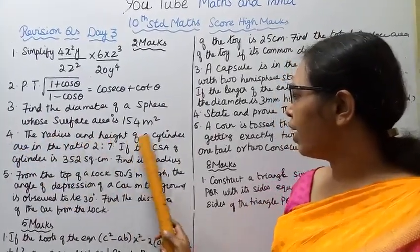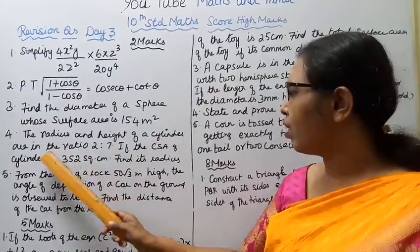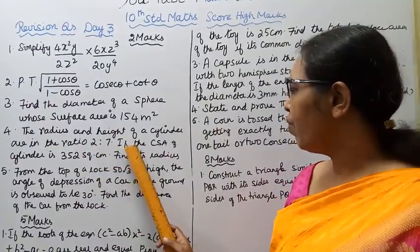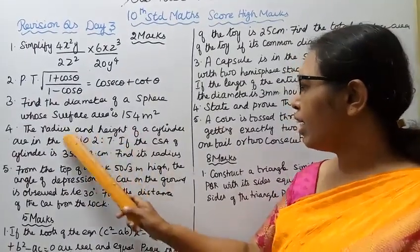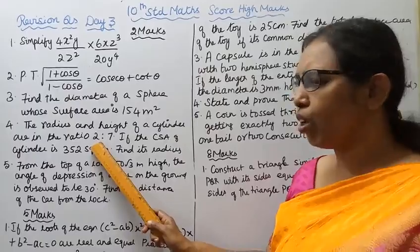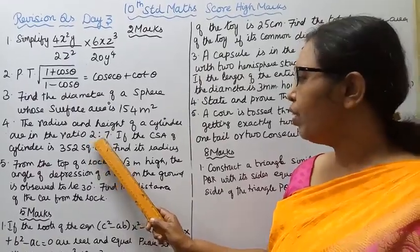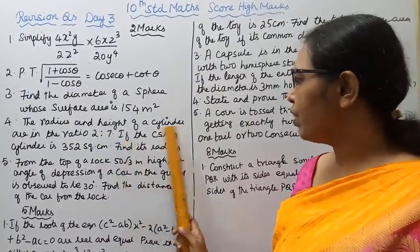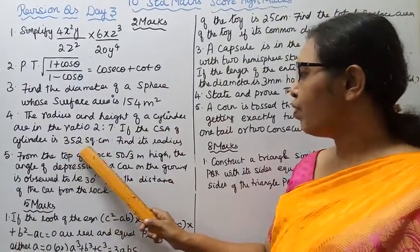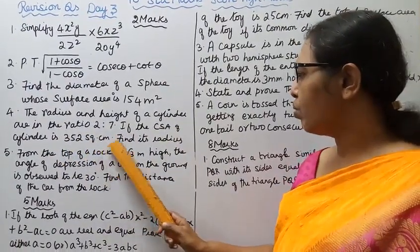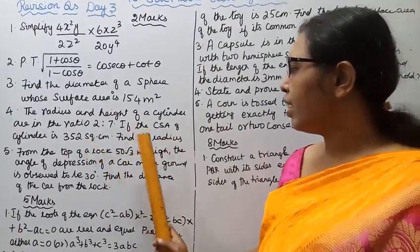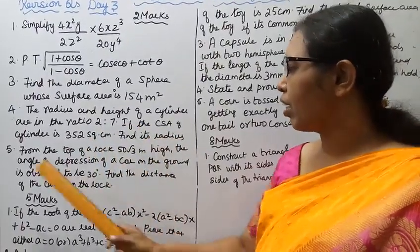Fourth, the radius and height of a cylinder are in the ratio 2:7. If the curved surface area (CSA) of the cylinder is 352 square centimeters, find its radius.